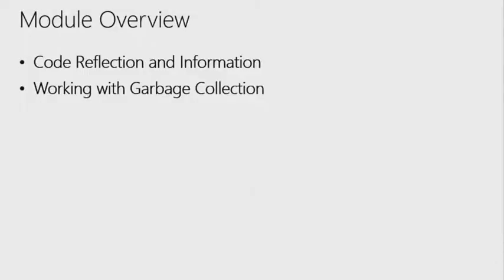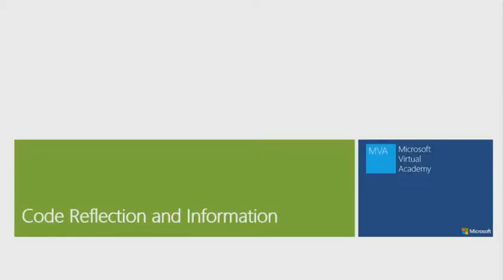The overview is we're going to be looking at code reflection and obtaining type information from that process, and also working with garbage collection. So first is code reflection, which is very powerful. We already talked about types and its metadata. We'll be getting into that. Let's jump in and go to town here.